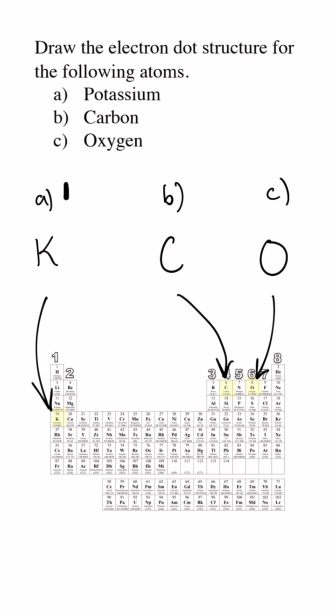So potassium K has one valence electron because it's in group one. Carbon C has four valence electrons and oxygen O has six valence electrons.